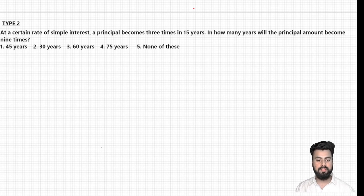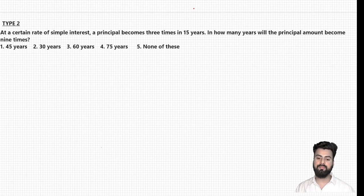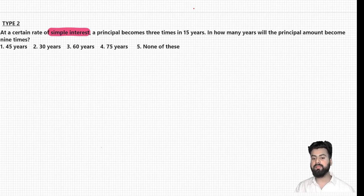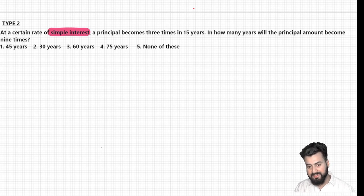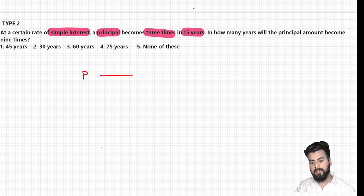Let us begin with this new type. Let's read the question. At a certain rate of simple interest, a principal becomes three times in 15 years. In how many years will the principal amount become nine times? Let us first understand what data we are given. This is a problem based on simple interest, so think from the perspective of simple interest concepts. The data says a principal becomes three times. If I assume principal amount as P, according to the question, P will change to 3P in 15 years.